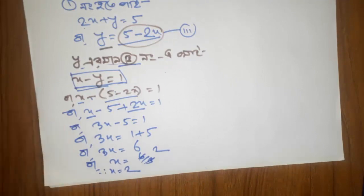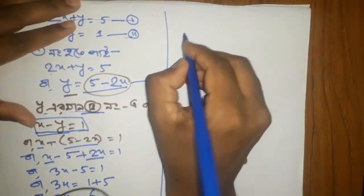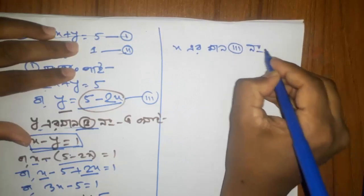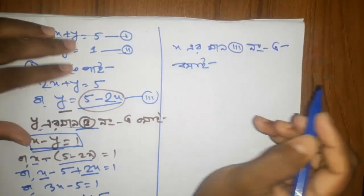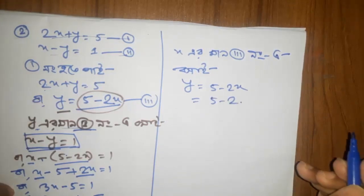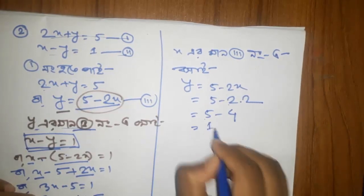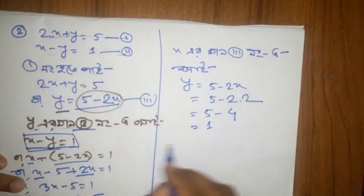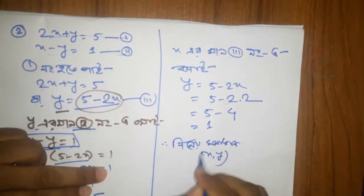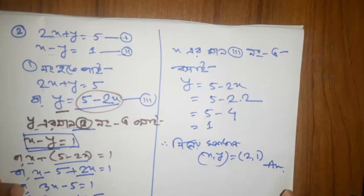3x minus 2. 3x minus 2. x minus 2, 3x minus 3. 3x minus 3, minus 2. y minus 5 minus 2x. 5 minus 2x minus 2x minus 2. y minus 1. x minus 2. y minus 1. This is the answer. So the answer is 3 numbers.